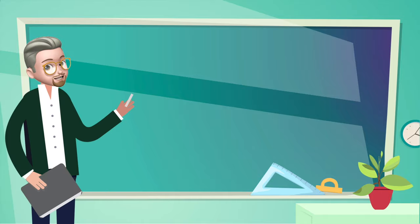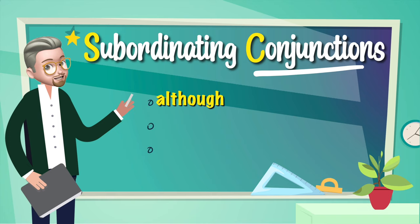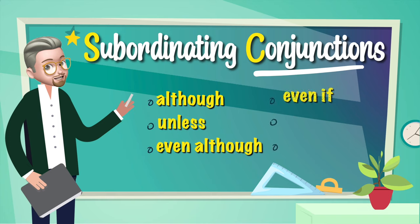Hello everyone, this is Mr. P. On today's lesson we're going to take a look at subordinating conjunctions — like although, unless, even though, even if, as long as, and because. So let's get started.